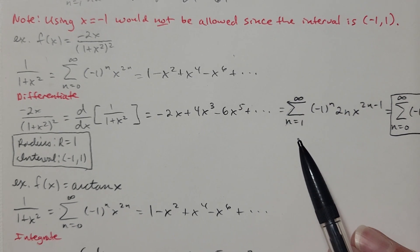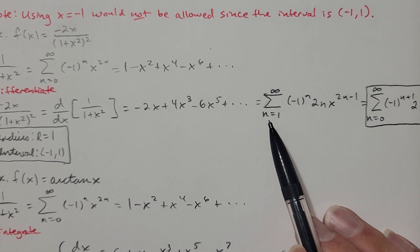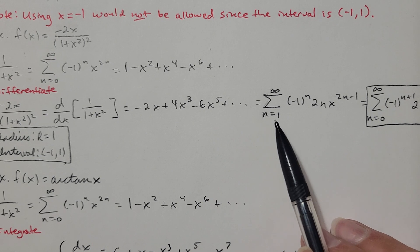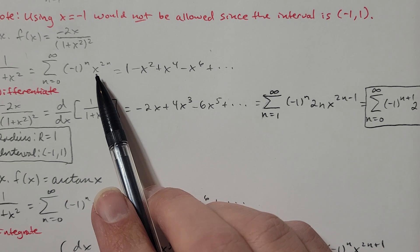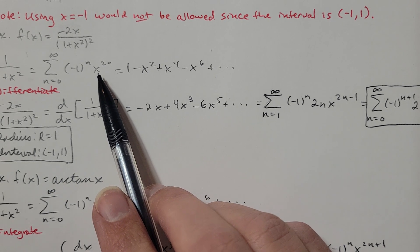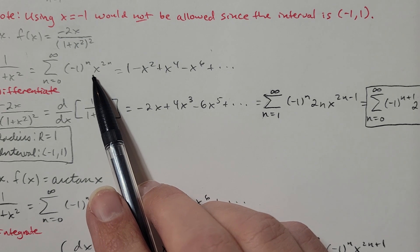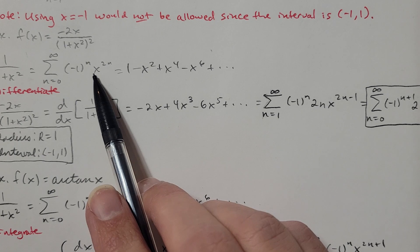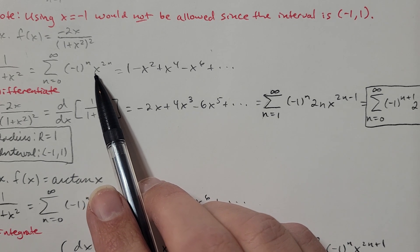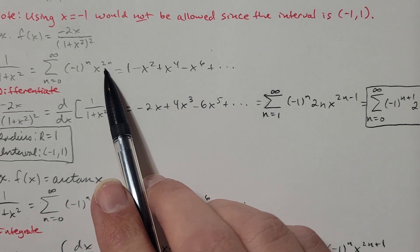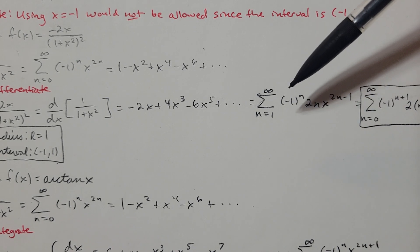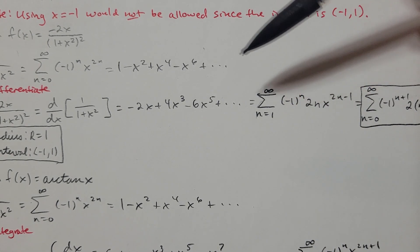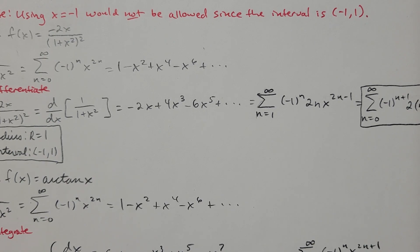Writing this as a power series, I'm starting at n=1. I'm differentiating the original series for 1/(1+x²) term by term, bringing down the power of x. So I get the summation of (-1)ⁿ · 2n · x^(2n-1), and I'm starting this series at 1. When you differentiate a series, you typically need to bump up the start point to the next number.